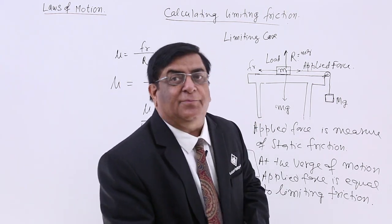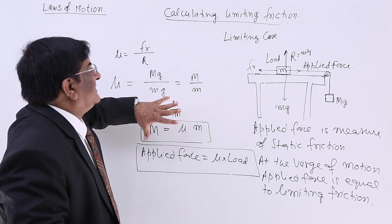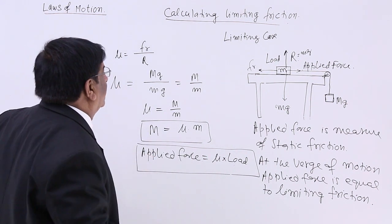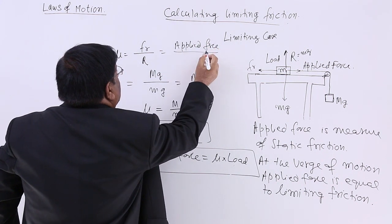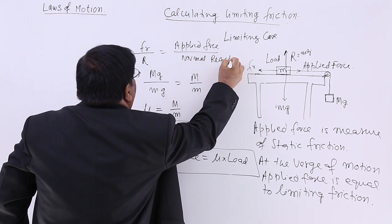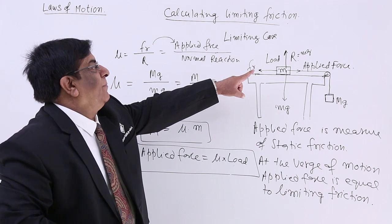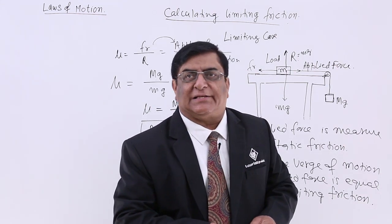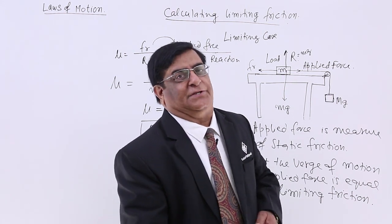This is the importance of μ — the coefficient of friction — so that the applied force can be changed with respect to the load. Please remember: μ is applied force upon normal reaction. And actually it is the force of friction, but in the limiting case, force of friction becomes equal to the applied force. This is how we calculate limiting friction. In the next lecture, we will see a few more terms — what is meant by angle of friction and other features related to friction. Thank you.